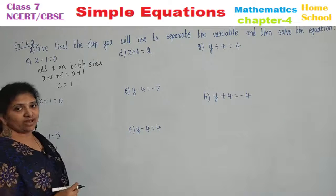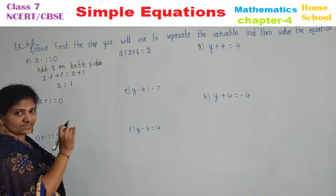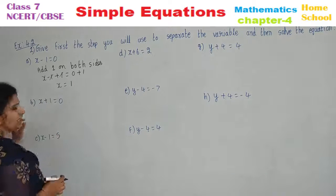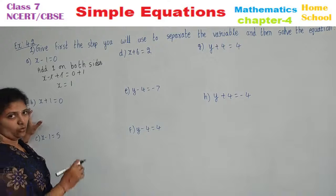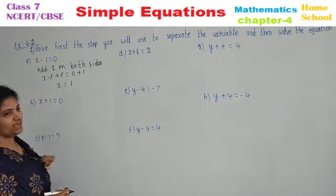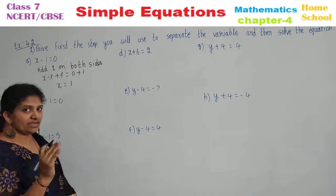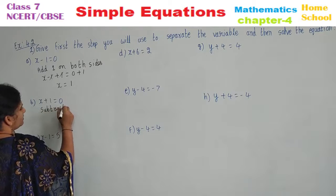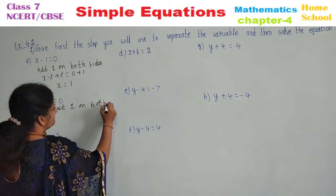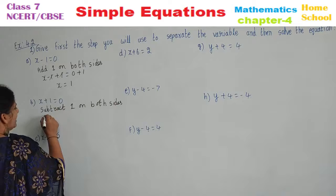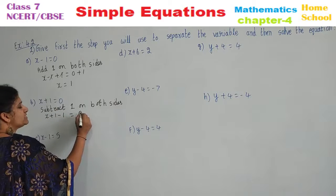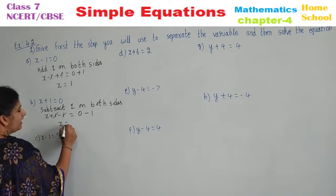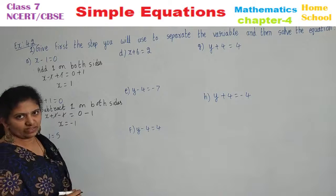This is the way we need to find the value of the variable — give the first step to separate the variable and then solve. Similarly, b: x plus 1 equals 0. Other than the variable, you have plus 1. The opposite of plus 1 is minus 1, so subtract 1 on both sides. x plus 1 minus 1 equals 0 minus 1; plus 1 minus 1 cancels, so x equals minus 1.